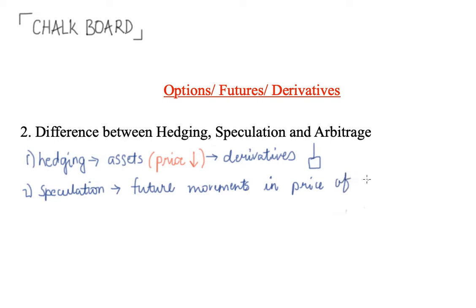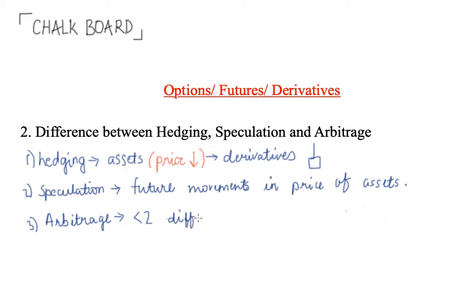Arbitrage tends to be the slightly more misunderstood form of strategy, but it is pretty simple if you break it down. The idea behind arbitrage is that an investor or a trader takes a position in two or more different markets, and the idea behind doing this is to ensure or to lock in on some form of profits.